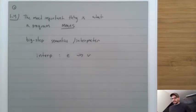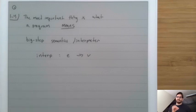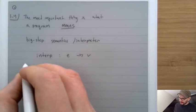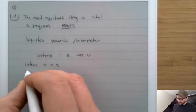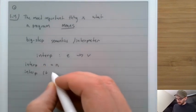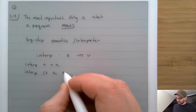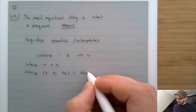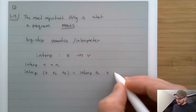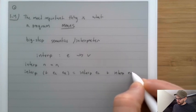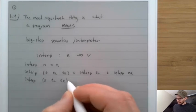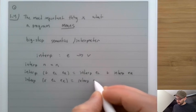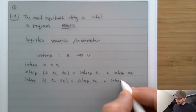A big-step semantics is essentially an implementation of the programming language written in math. We say: interpreting a number gives just that number; interpreting an addition with left and right expressions gives the result of interpreting the left plus interpreting the right; and interpreting a multiplication is the product of interpreting the left and interpreting the right.